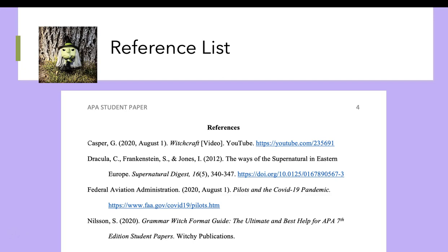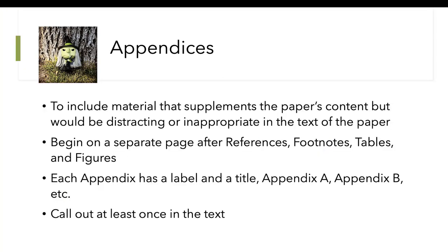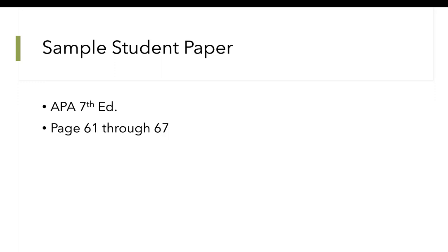If you put any material that supplements your paper's content but would be distracting inside the text, you place it in an appendix after any references, footnotes, or tables and figures, and label it Appendix A, Appendix B, and so on. You must reference it at least once in the text so people know to look at the back of the paper. A great source is the APA 7th edition textbook or website. For a sample student paper to make sure you've dotted every I and crossed every T, see pages 61 through 67. Thank you very much.